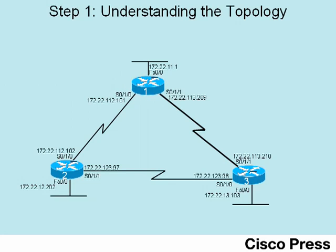To start scenario step one, let's take a look at the topology and IP addresses used for this video. For those who have already watched ICND2 Lab 5, it's the same topology, IP addresses, and masks used in that video. We have three routers in a triangle of serial links, each with a fast Ethernet interface. The IP addresses are shown, and since EIGRP supports VLSM, different masks are used throughout the network. We've got the 255.255.255.252 mask used on the serial links, and each of the three LAN subnets uses a different mask.